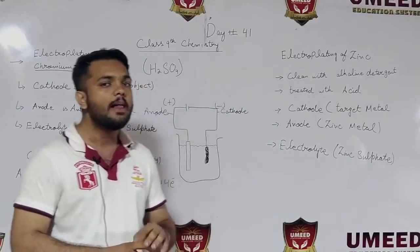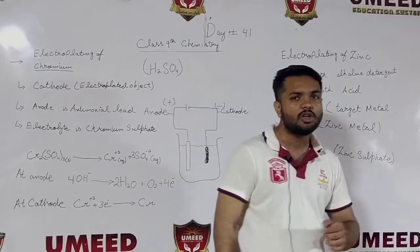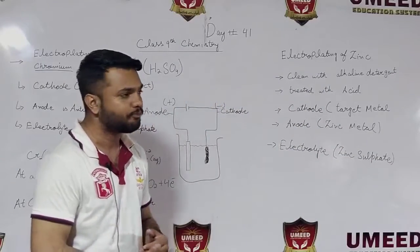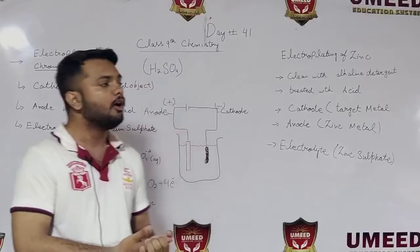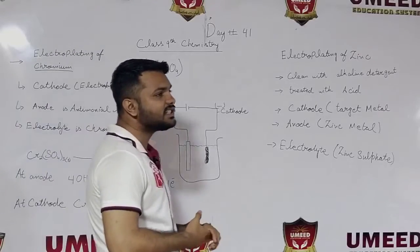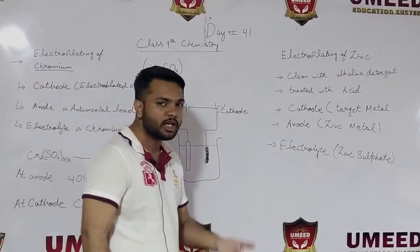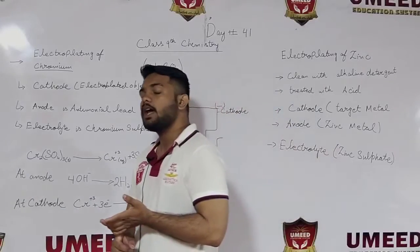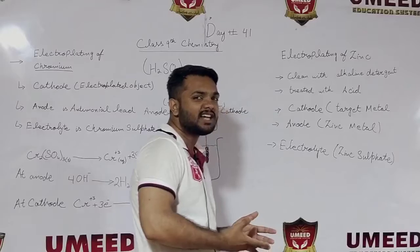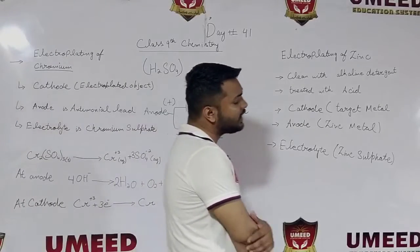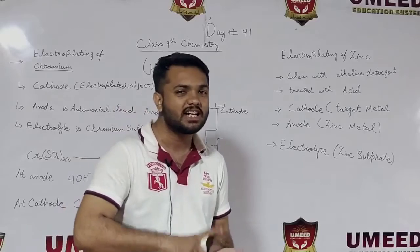Electroplating of zinc follows the same topic - electroplating any material uses the same methods. The only differences are the cathode, anode, and electrolyte. The rest of the whole procedure remains the same. The object to be electroplated is placed at the cathode.